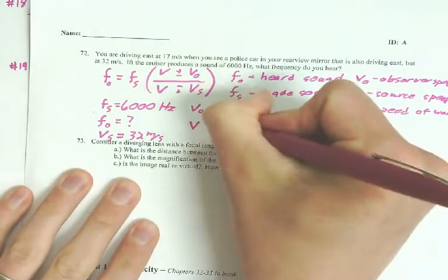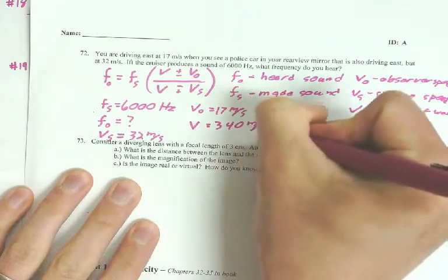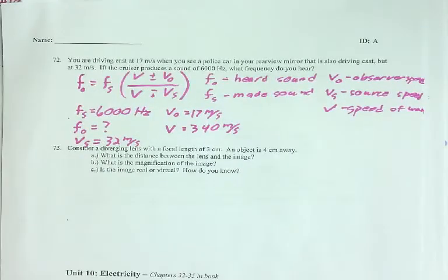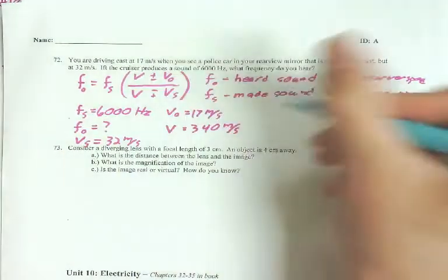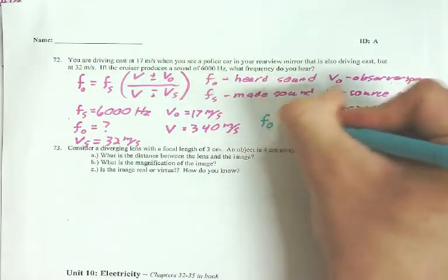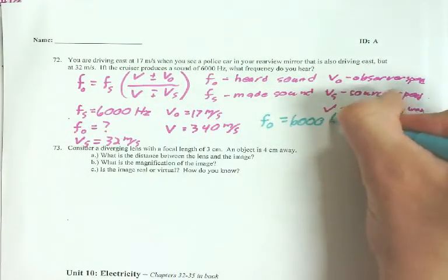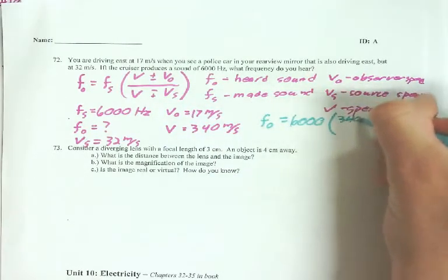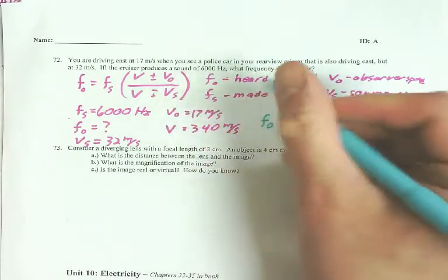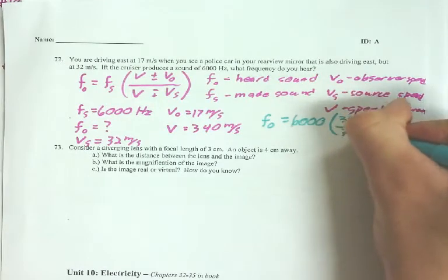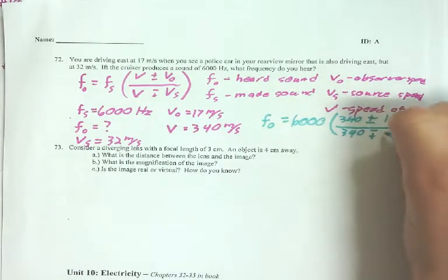So, the speed of the wave is 340 meters per second. So, F-O is what I'm solving for. Equals F-S, 6,000, times V, 340, plus or minus V-O, which is 17, over 340, minus plus 32.